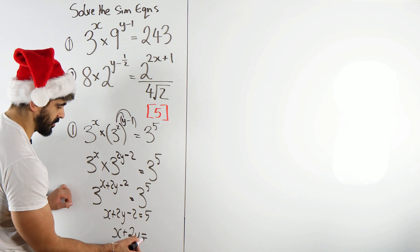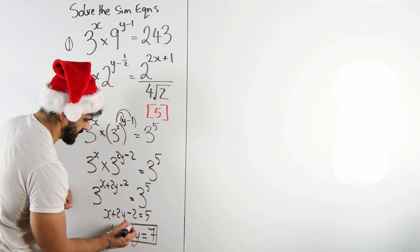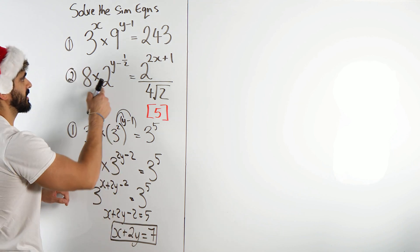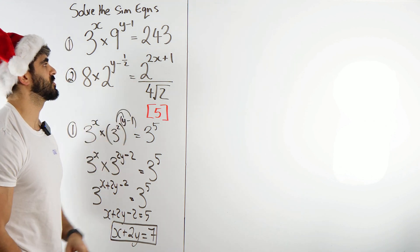So x plus 2y minus 2 is 5, and we just add the 2 over. Here is our first actual equation that we're going to be solving with. So we've got minus 2, we add it over, we get 7. We just need to do the exact same thing on the second equation.